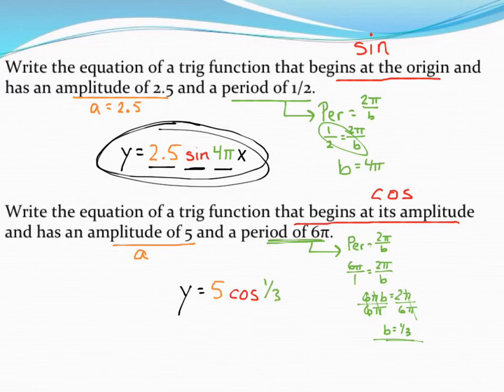And then this will always end with an x. So my equation that fits this description will be y equals 5 times the cosine of 1 third x.